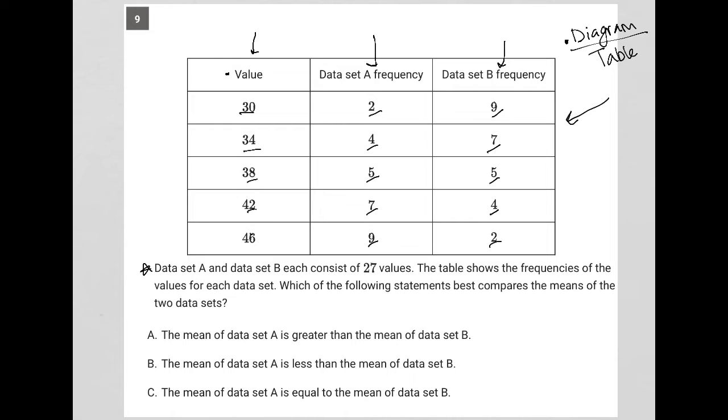For instance, in data set B, I have 5 38s. I also have 5 38s in data set A. So I just want to make sure I understand how to read this table before I start to read the actual question.